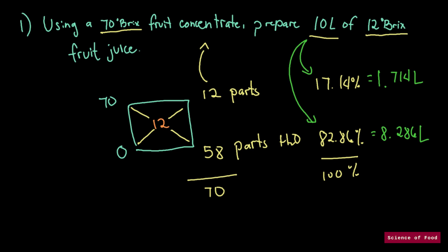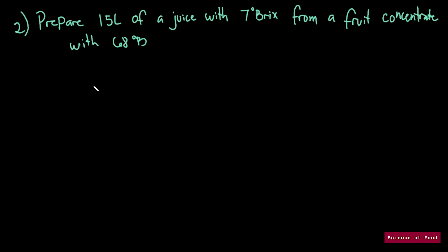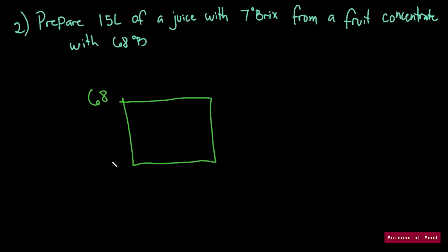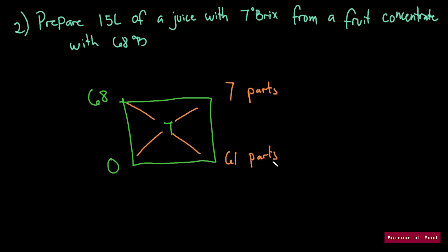Prepare 15 liters of juice with 7 degree Brix. We need to prepare 7 degree Brix from a fruit concentrate with 68 degree Brix. Again, the first thing we need to do is draw a box. The given written on the left side is 68. We're going to use water again, so that would be 0, and our final concentration is 7. We subtract diagonally: 7 minus 0 is 7, and 68 minus 7 is 61. So we have 7 parts and 61 parts. We would want to get the percentage.